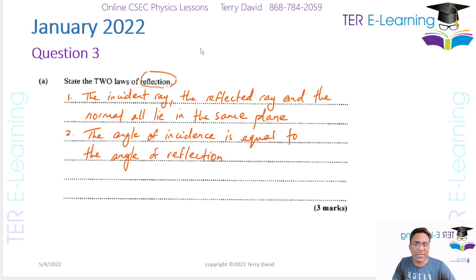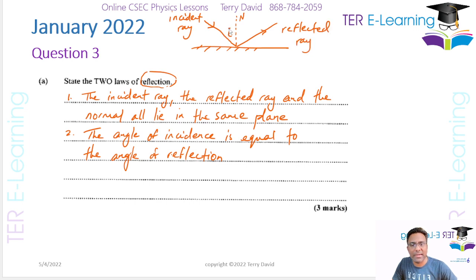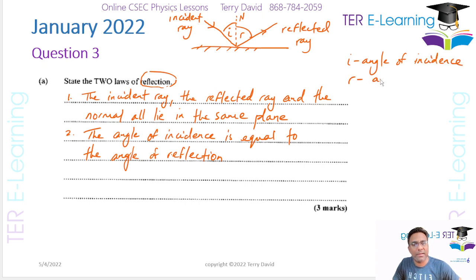Now when I say draw a simple diagram, you need to draw a mirror, then draw a normal to the surface. Draw a ray approaching the mirror — that ray is called the incident ray. Because it's going to be reflected, this here is my reflected ray. The angle i is my angle of incidence and r is the angle of reflection.